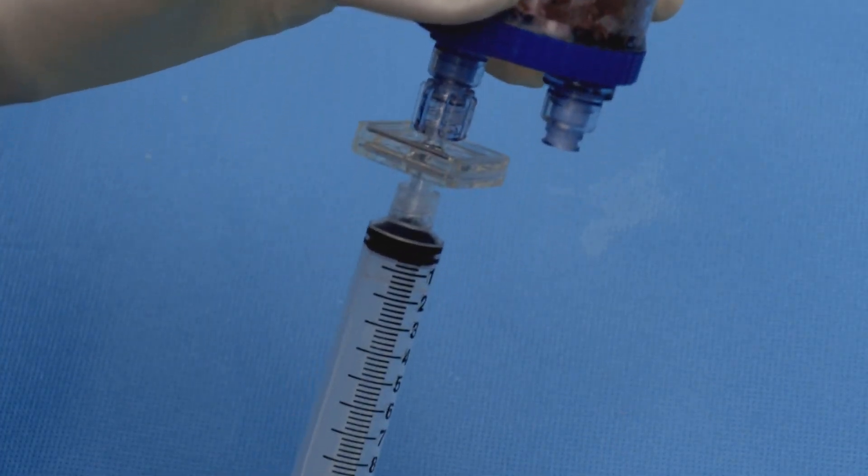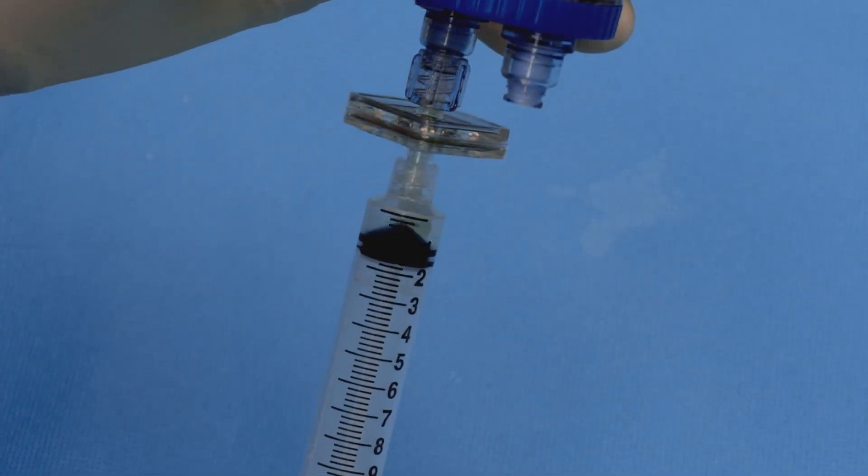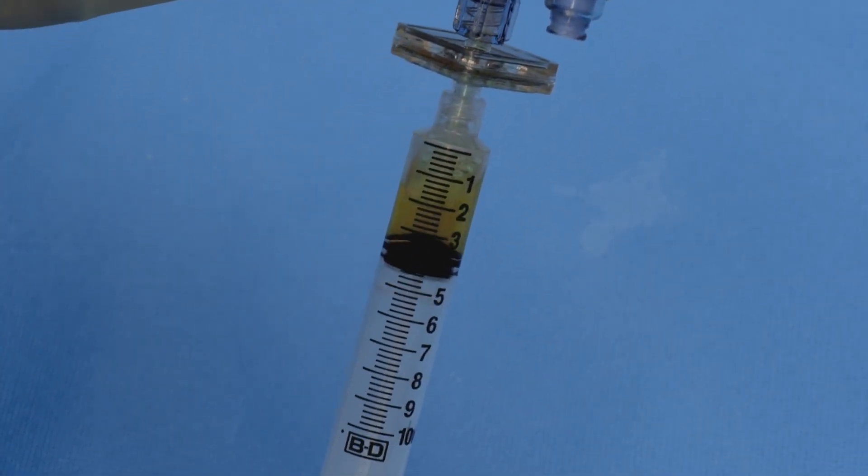Turn around the thrombinator and withdraw 10 ml of autologous thrombin.